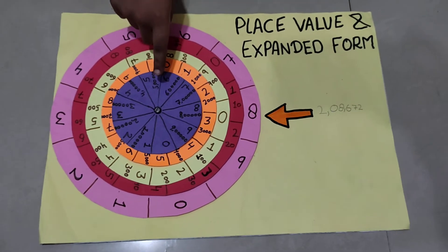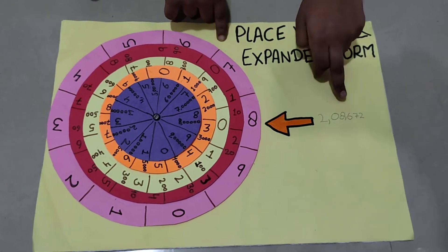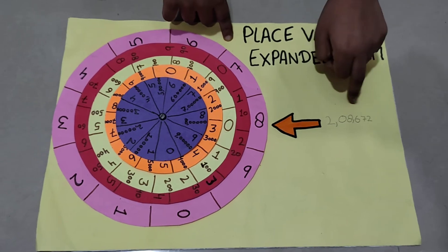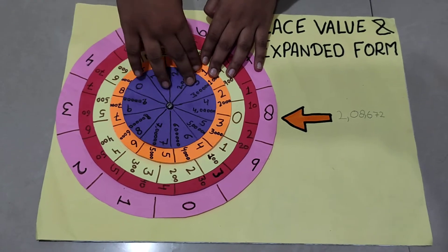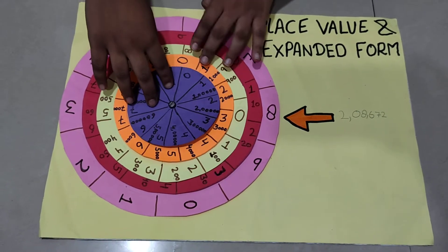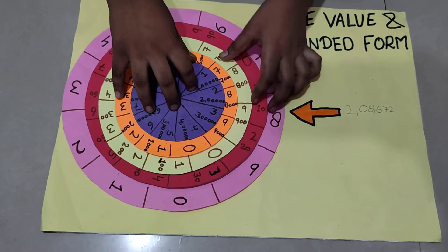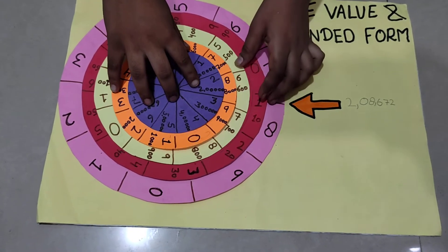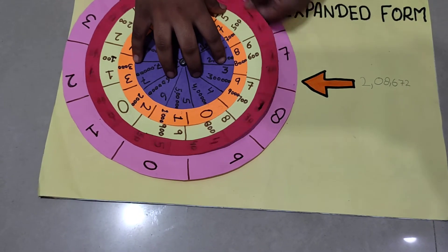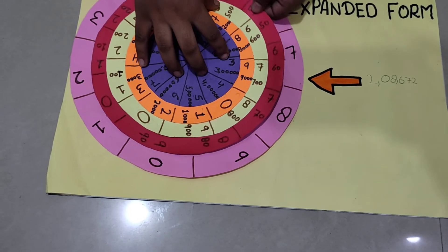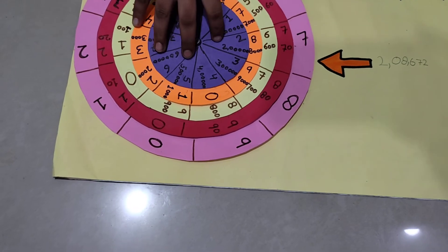The fifth circle is for lakh's place. Suppose I want to learn the expanded form of 2 lakh 8672. So in this, the fifth circle, I will move on 2 lakh, then this to 8000, and then this to 600, then this, we will move this to 70, like this, and this to 2.